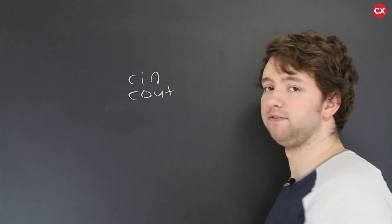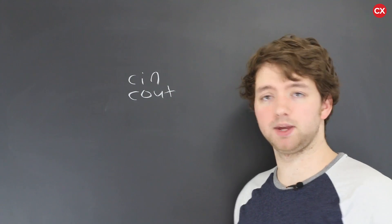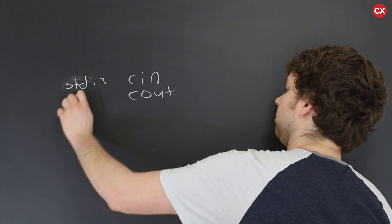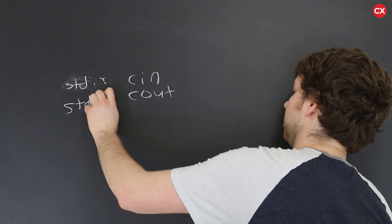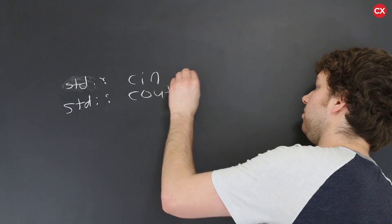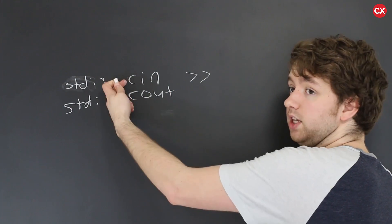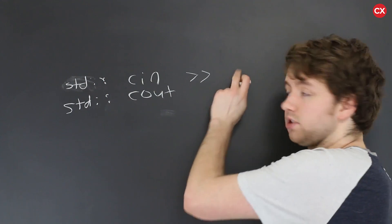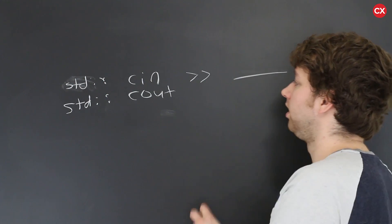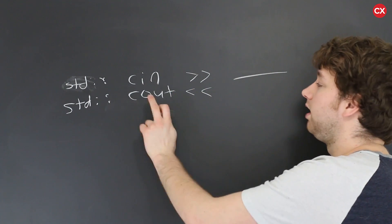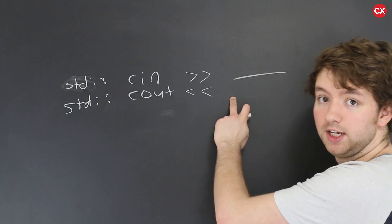Then we touched a little bit on input and output with cin and cout. These were objects made available to us in the standard namespace, so we have to prefix it with 'standard' or use a using statement. For cin we use the greater-than signs which direct input to a variable — so we put a variable name there. Cout is different in that we use the arrows towards the console and give it a value to print.